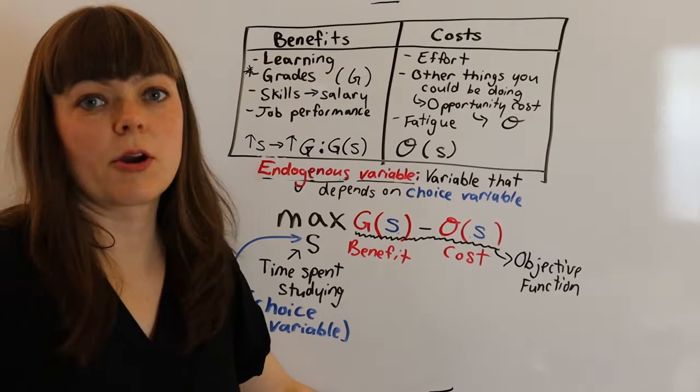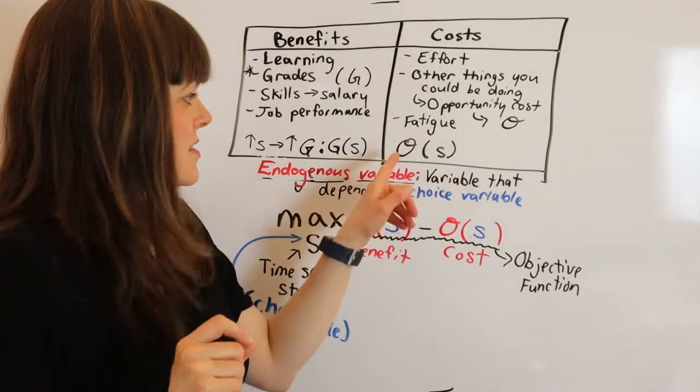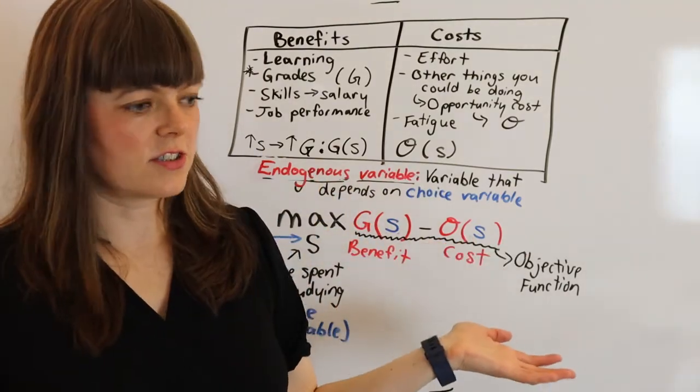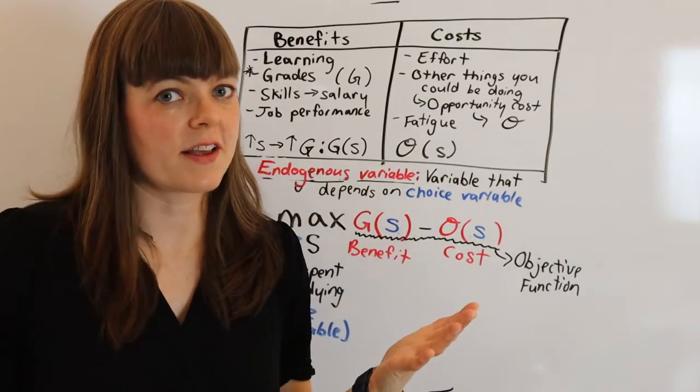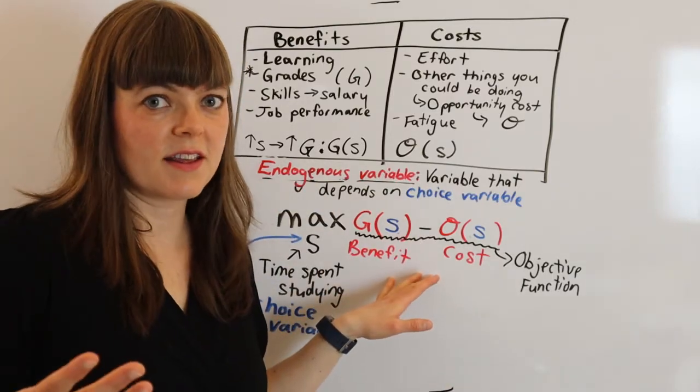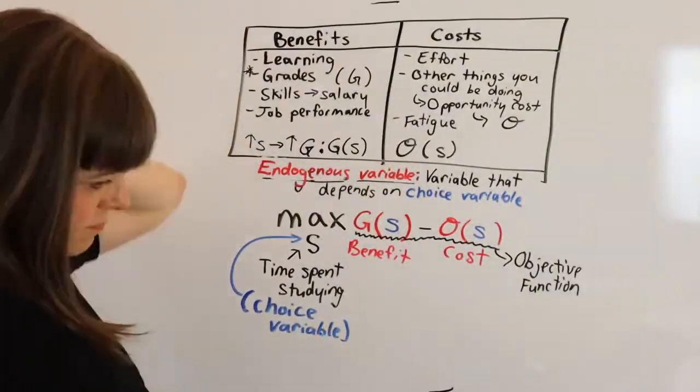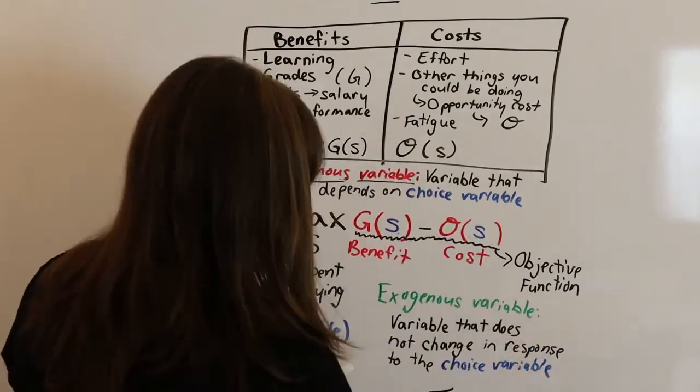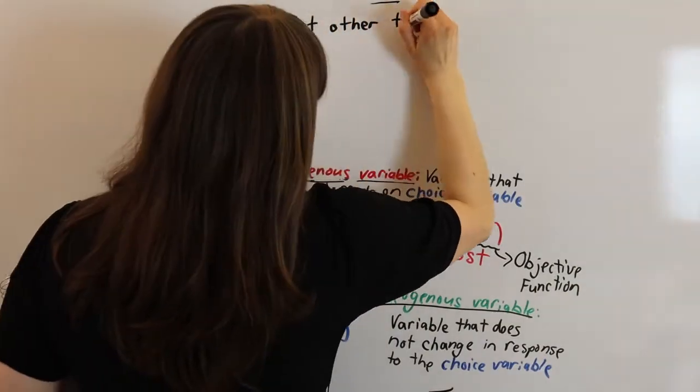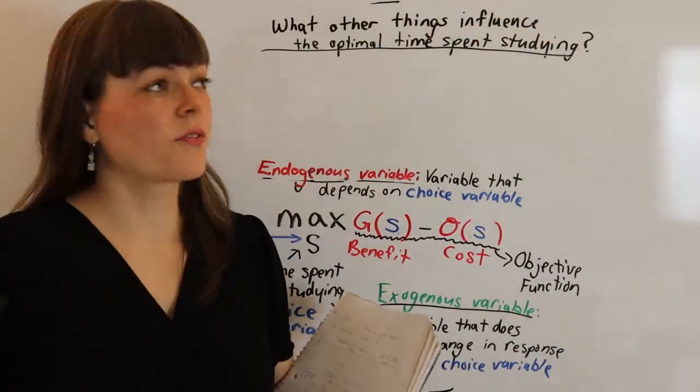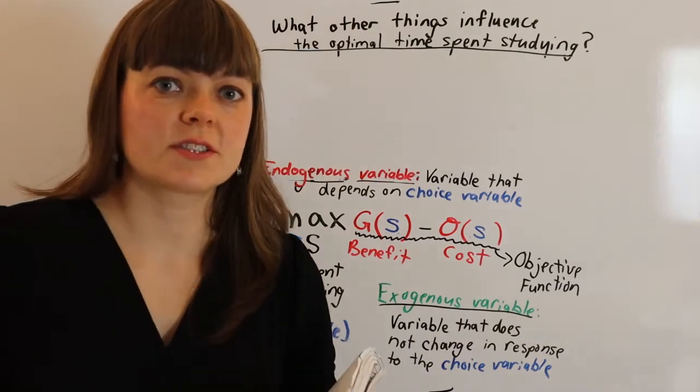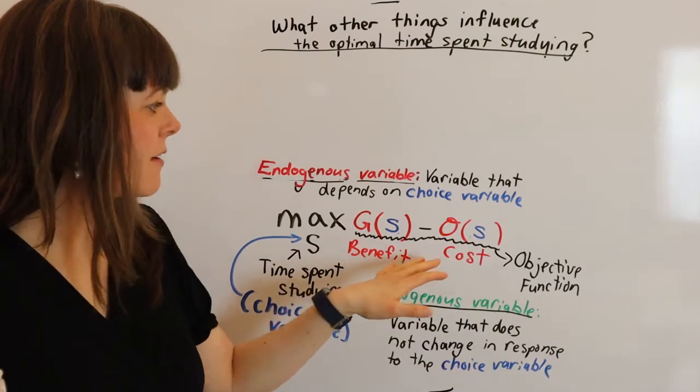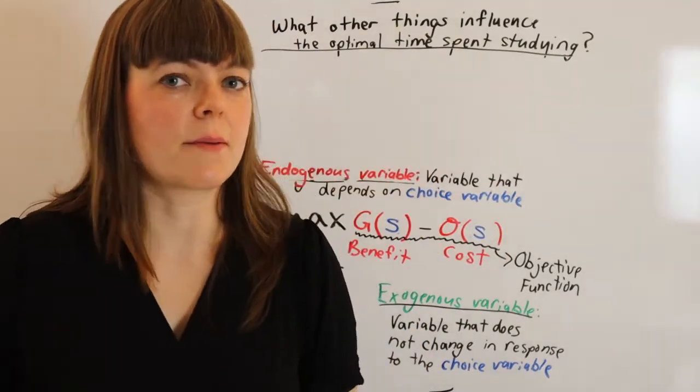And so once we have this set up, we can add exogenous variables. Now, exogenous variables do not, they're not functions of our choice variable. They're going to be other variables that might influence the decision. So if we start brainstorming what other things influence the decision about how much time to spend studying, we might come up with a list. Okay, if we're thinking about adding exogenous variables to the model, we're going to be asking the question, what other things are important influencers determining the optimal time spent studying?